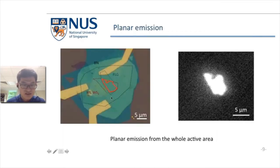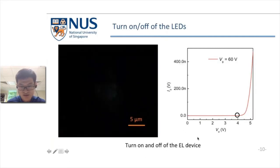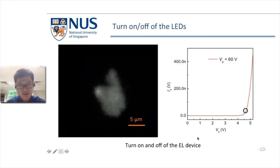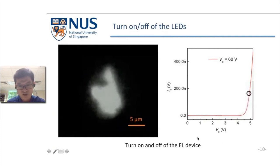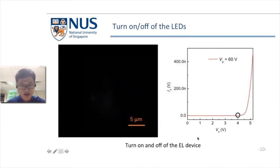This picture shows one of our devices. The red line is the control of the stacked overlapped area, and we can see the emission is planar from the right image. Here I would like to show a video to show that the LED can be turned on and turned off by controlled bias. We can see at the current level of 100 nano-ampere, the device can achieve quite high brightness.